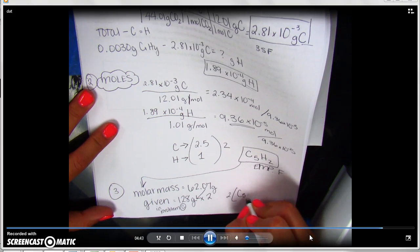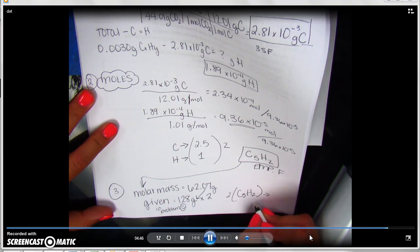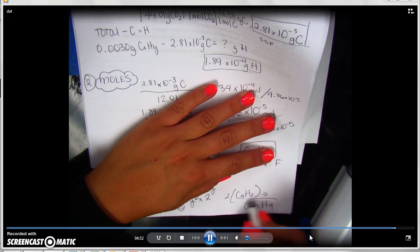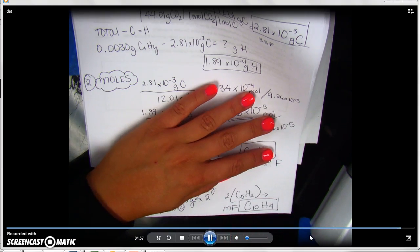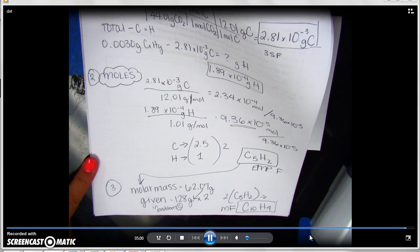So, as you can see, now we're going to take our empirical formula and multiply it by 2. So our molecular formula, or how it appears in nature, is going to be C10H4. And that is how you work these types of problems. So go ahead and do homework 1F number 6.